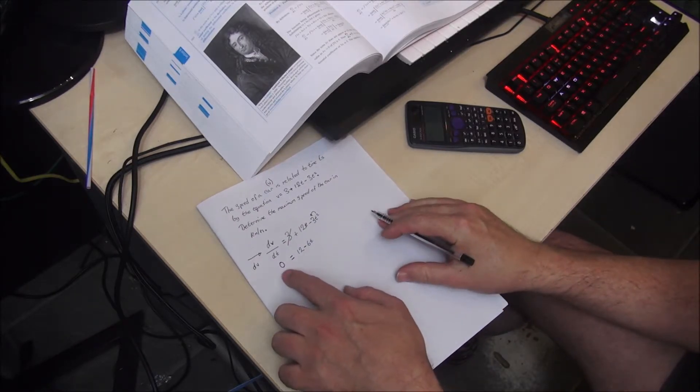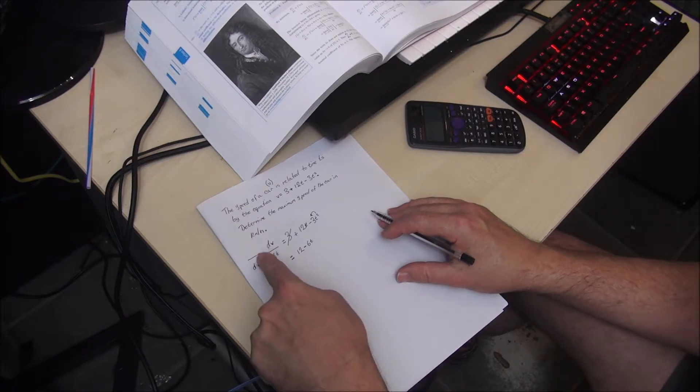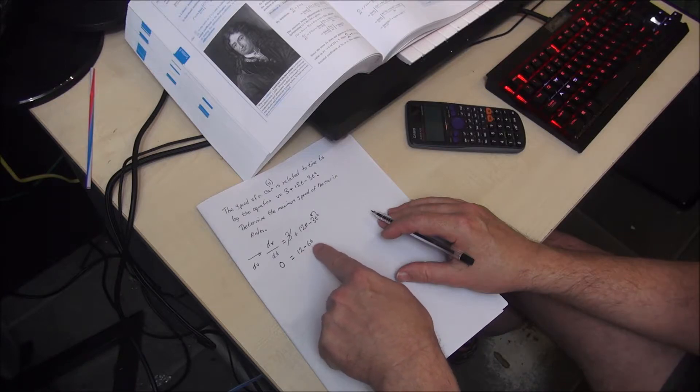So what we've done is we have differentiated time with respect to velocity and produced an equation which gives us dv divided by dt is equal to 12 minus 6t.